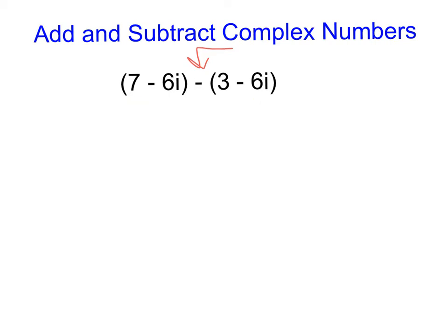So what I'm going to do here in order to subtract these is I'm first going to think about what I can do to get rid of these parentheses. Now, you should remember from previously in your algebra career that if you have nothing or a positive out in front of your parentheses, it's really a distribution of 1. So what we can do to that first parentheses is we can just distribute a positive 1 and rewrite it as 7 minus 6i.